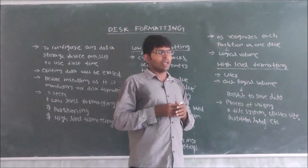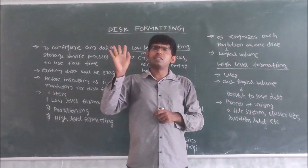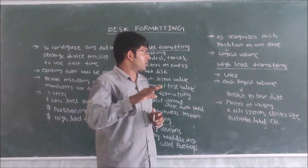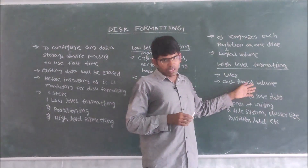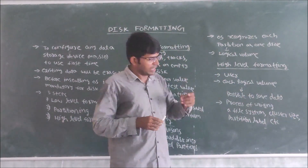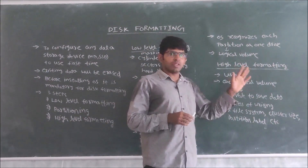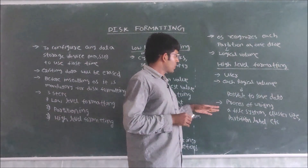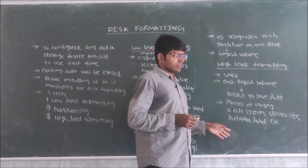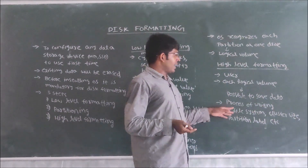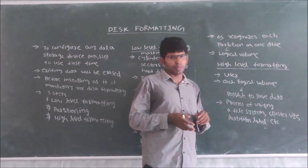Next is high-level formatting. Once we have created C, D, and E drives through partitioning, we format all these drives — only then can data be saved. This is done by the user. Each logical volume will be formatted, and after that only we can save data into that logical volume. In high-level formatting, we write a file system, define the cluster size, and set the partition label, among other things.